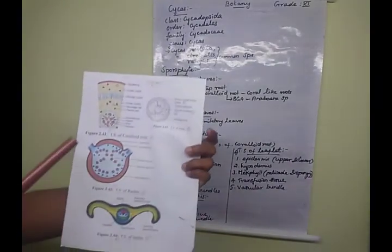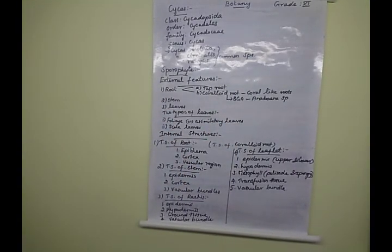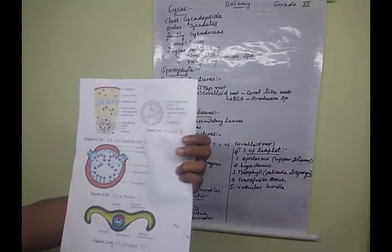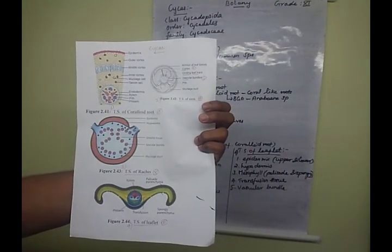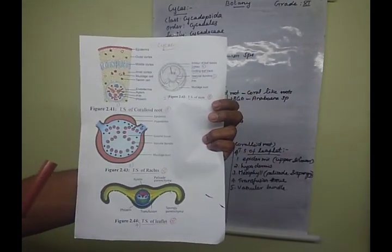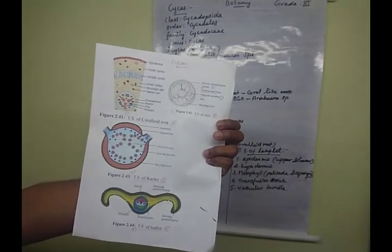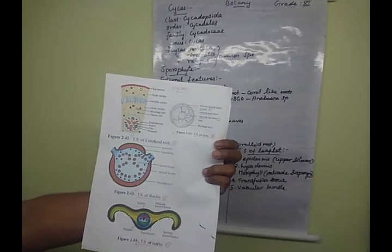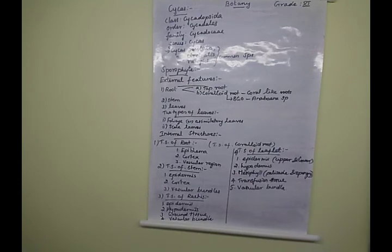Today's class covered three transverse sections of the internal structure of the Cycas plant. All of you should draw these three diagrams and label the parts before the next class. These four transverse section questions are very important — sometimes they will ask only the diagram part, sometimes the essay type with diagram plus explanation. Learn all of them thoroughly. Thank you very much, students.